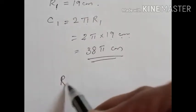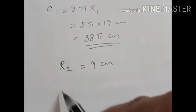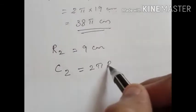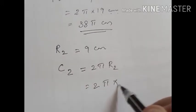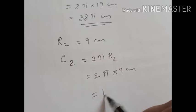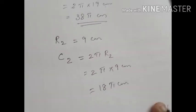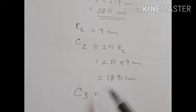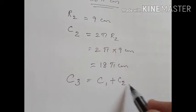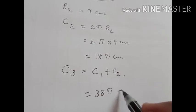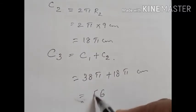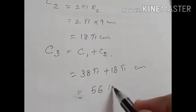The radius of the second circle R2 is given as 9 cm. Its circumference C2 equals 2 Pi R2, that is 2 Pi into 9, which gives 18 Pi cm. According to the question, the circumference of the third circle equals C1 plus C2, which is 38 Pi plus 18 Pi. 38 plus 18 is 56, so C3 equals 56 Pi cm.